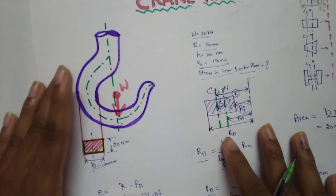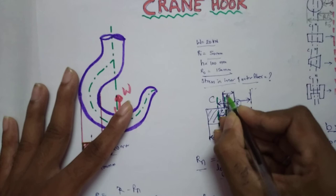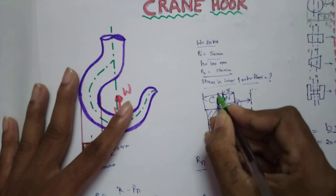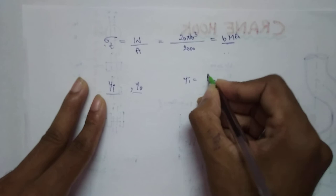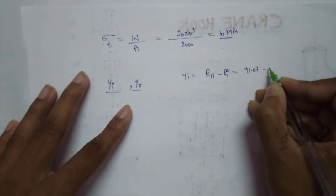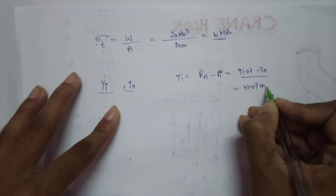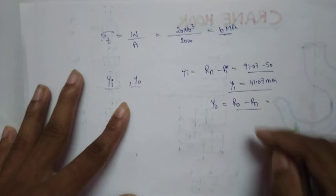Now we find y_i and y_o. y_i is the distance from the inner fiber to the neutral axis: y_i = R_N − R_i = 91.07 − 50 = 41.07 mm. For y_o, which is from the neutral axis to the outer fiber: y_o = R_o − R_N = 150 − 91.07 = 58.93 mm.